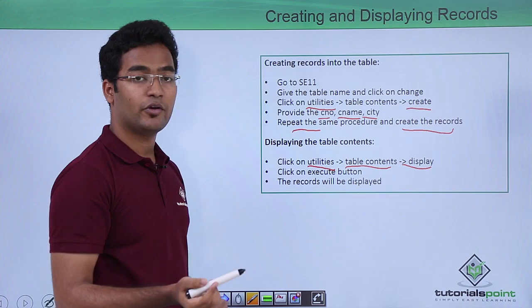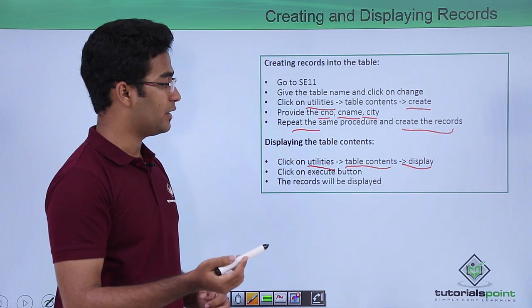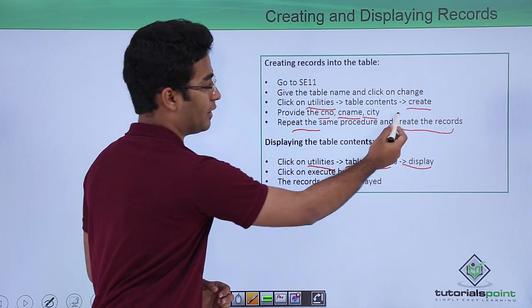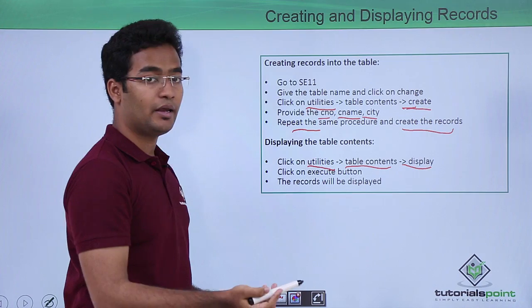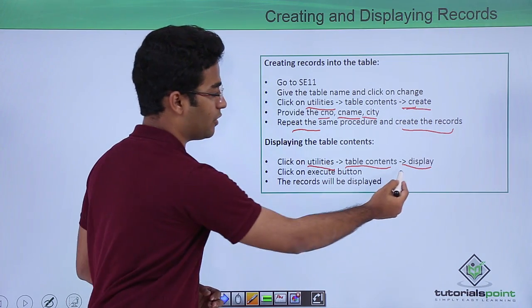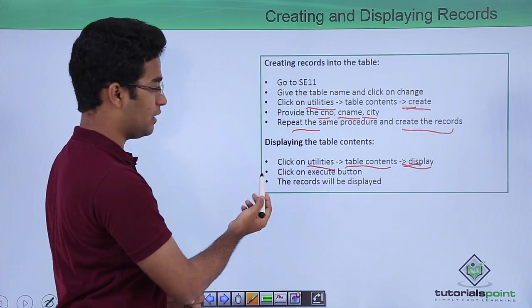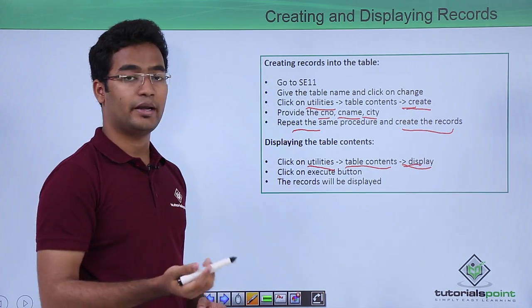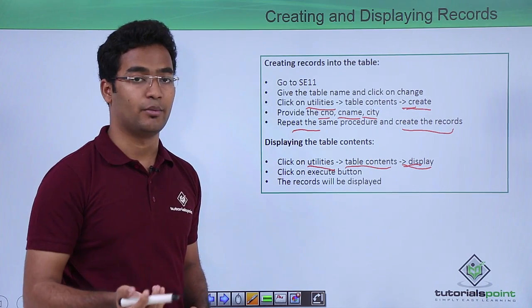To display the records, we go to Utilities, then Table Contents, and click on Display — as opposed to Create which we used before. Here we can see all our data in that particular database table.